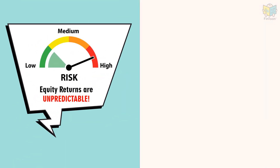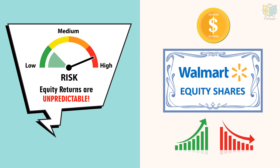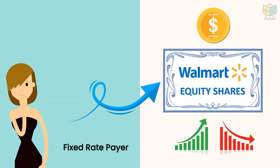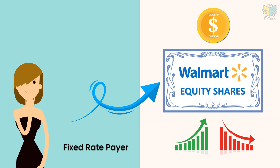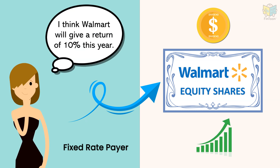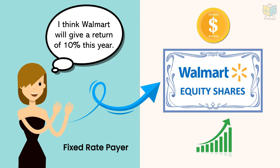We know that it is very difficult to determine the potential gains from equity investments, and one can only take a guess. Though Walmart usually pays a dividend, the share price can go up or down. Thus, the overall return could be positive or negative. Using the Total Return Swap, Tina is able to get an exposure on Walmart without actually investing in the equity of the company. She feels that Walmart will generate total returns of around 10%, and she will benefit from the swap.